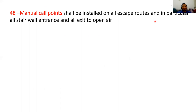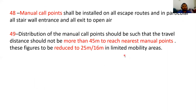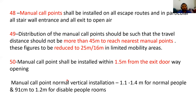Question 48: manual call points shall be installed on escape routes, particularly at all stairwell entrances and all exits to open air. Travel distance to the nearest manual call point should not exceed 45 meters, reduced to 25 meters in limited mobility areas. Manual call points shall be installed within 1.5 meters from the exit door opening. Normal vertical installation height is 1.14 meters for able-bodied people and 91 cm to 1.2 meters for people with limited mobility.